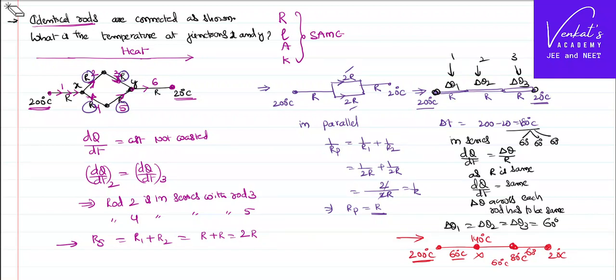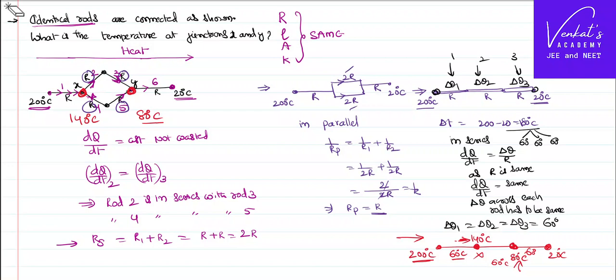So his question is, what is the temperatures at the junction x and y? So at the junction x, it must be 140 degree centigrade as I have told you. At the other junction, it must be 80 degrees centigrade. That is how we can solve the problem using the basic concepts of series connection.